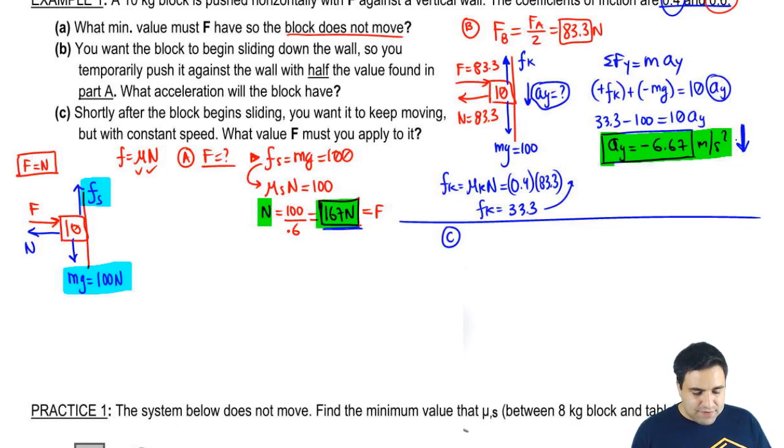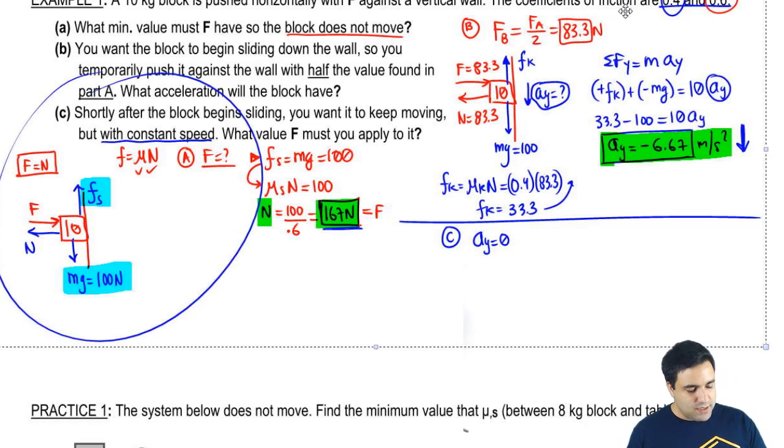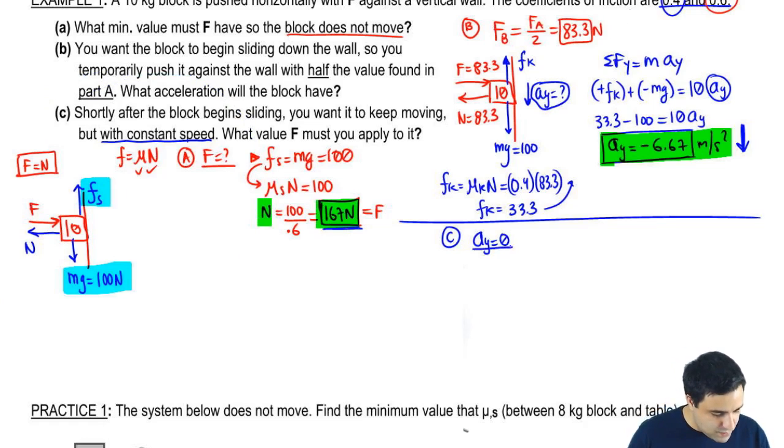Part C says shortly after the block begins sliding down, you want to keep it moving but with a constant speed. So you keep changing your mind. Moving with a constant speed means that you want your acceleration of the y-axis to be 0. In the first part, it didn't move at all. Second part, it accelerated down. And the third part, I want it to keep moving but with an acceleration of 0.